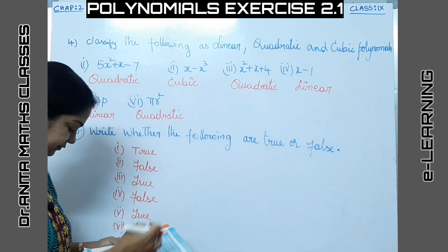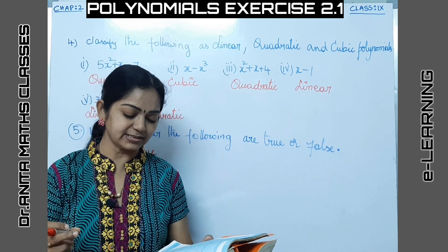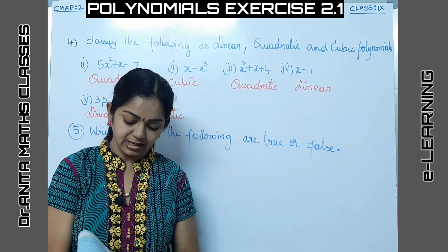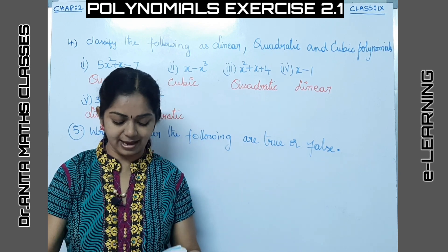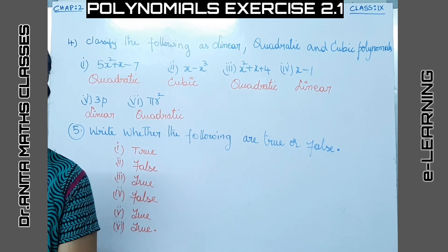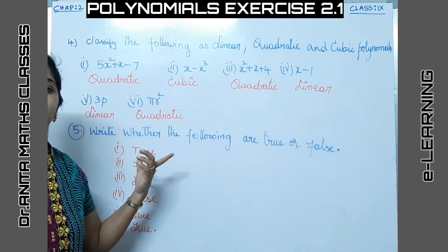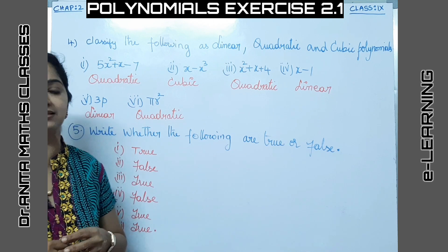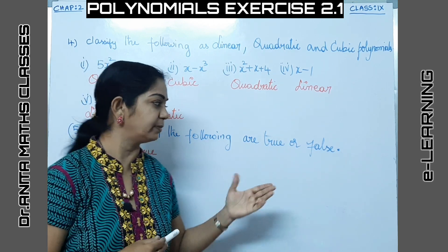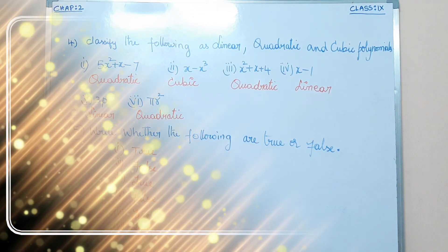The sixth problem: give one example each of a monomial and a trinomial of degree 10 — just provide your own examples. With this we have completed exercise 2.1. Hope you have understood. Please make a note of it. We'll see the next concept in our next video lesson. Thank you all.